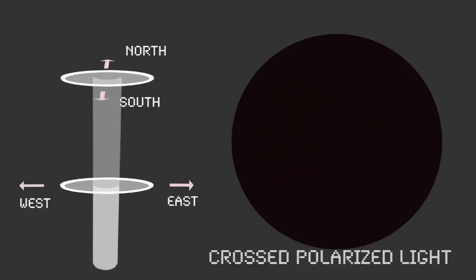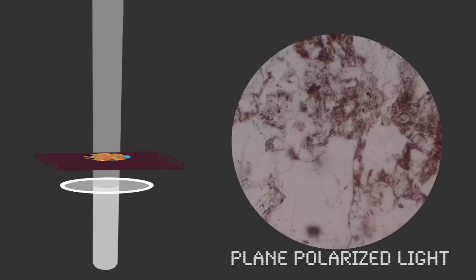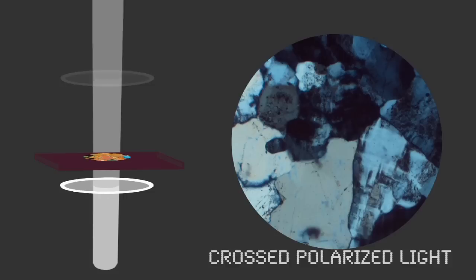A thin section is a piece of rock sliced so thin that it is translucent. Crystals on a thin section can reorient light rays. As we slide a thin section under the microscope's lens, we can view the rock's tiny mineral grains.